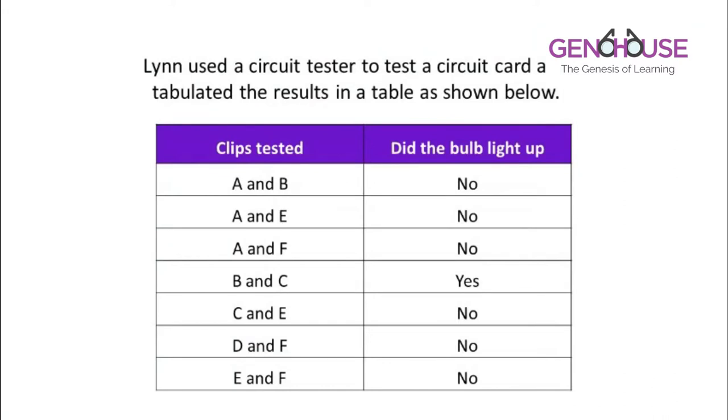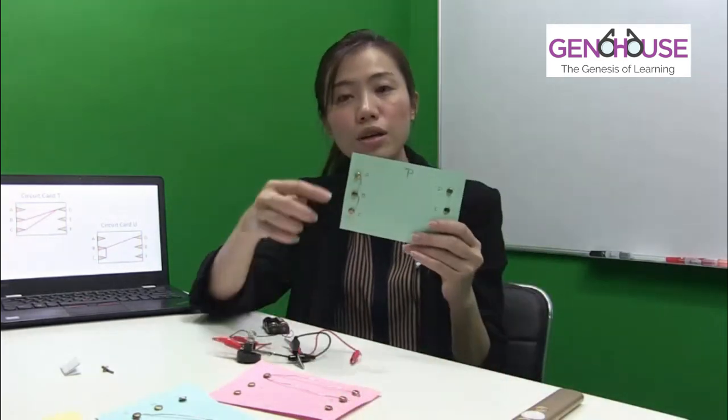I can clearly see that clips B and C cause the light bulb to light up. So I will quickly test all the circuit cards given and make sure that those with B and C lighting up stay, while those that don't will be eliminated. Our task is to find out which card Lynn tested based on how it is connected by the wire.